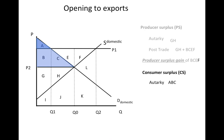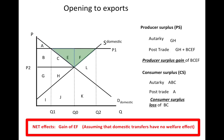In autarky, consumer surplus is area ABC. As a consequence of the higher price, consumer surplus falls to area A, with a consumer surplus loss of BC. Area B is the loss for consumers who continue to buy this product at the higher price. Area C is the consumer surplus loss associated with consumers who are priced out of the market, no longer willing to buy at price P1. That is the downside of exports. We have gains, we have losses, but a net gain of EF.